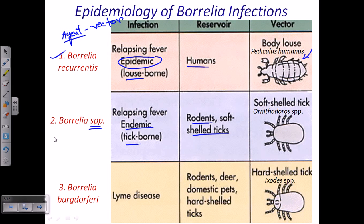The third type of infection is completely different — it is called Lyme disease, caused by Borrelia burgdorferi. Borrelia burgdorferi has rodents, deer, domestic pets, and hard-shelled ticks as reservoirs, and the vector is the hard-shelled tick. All of the vectors are arthropods — that's an important point.